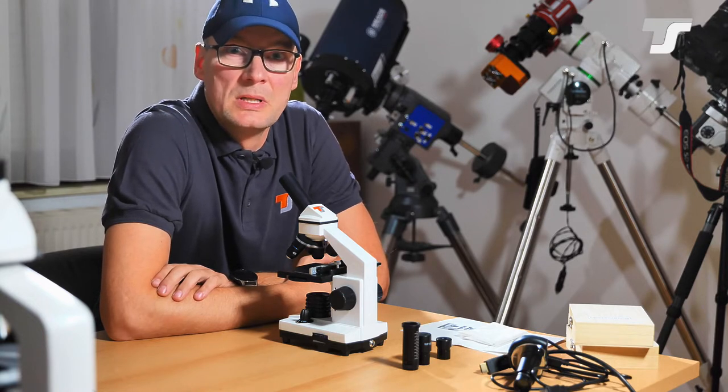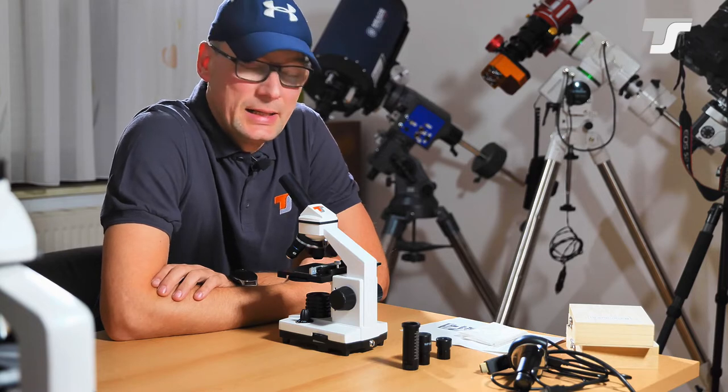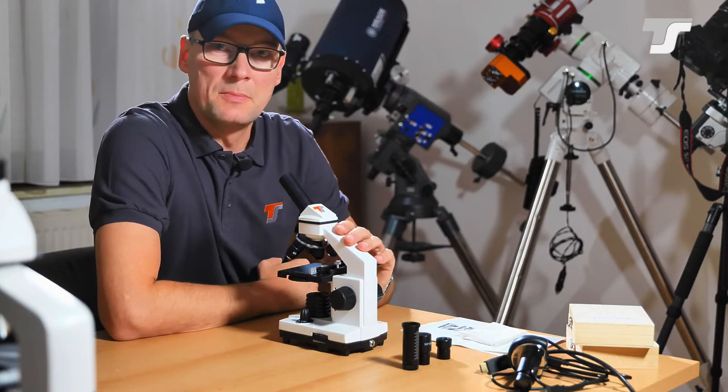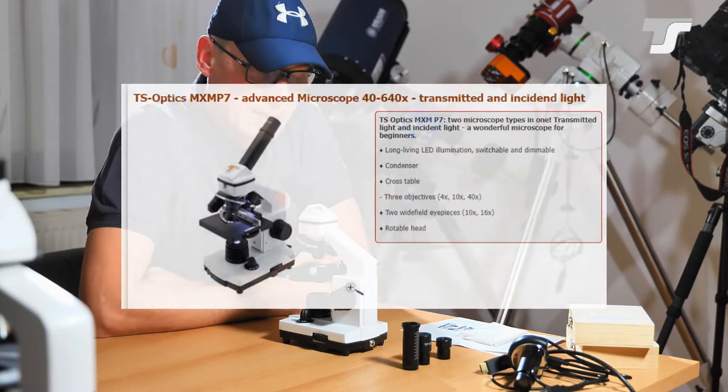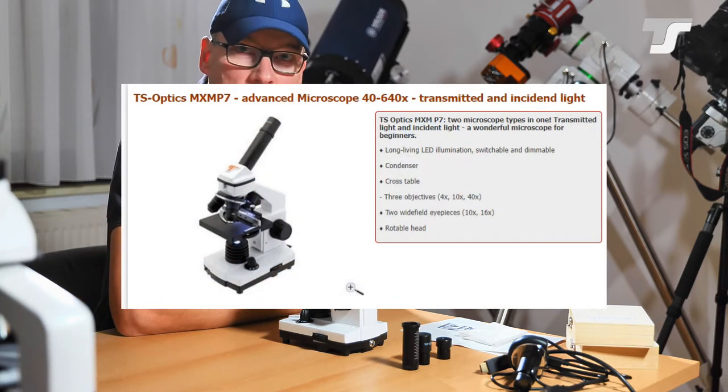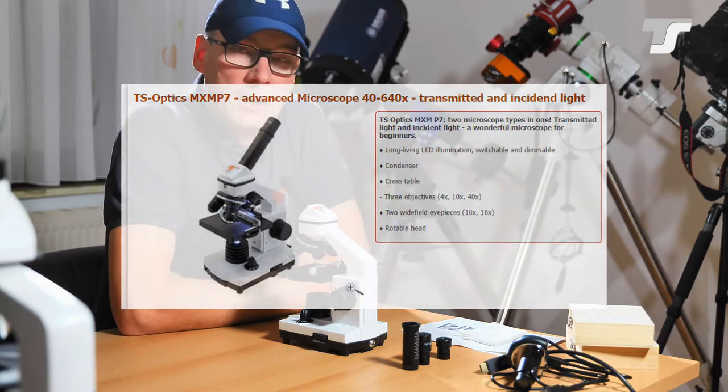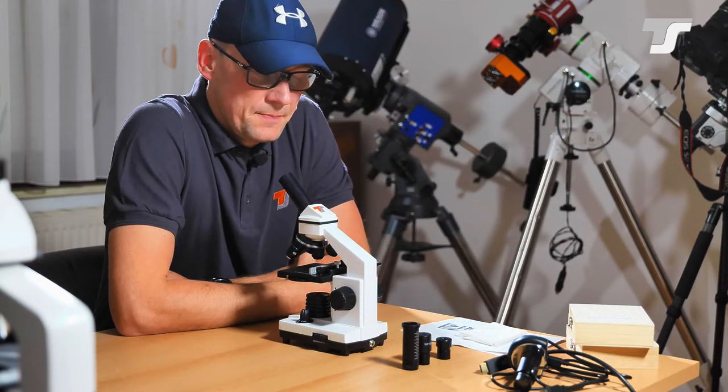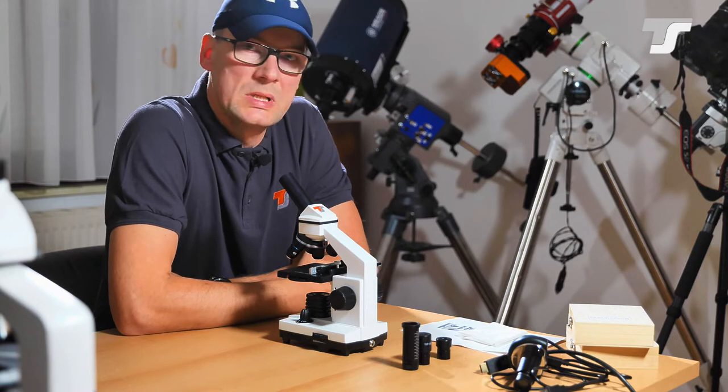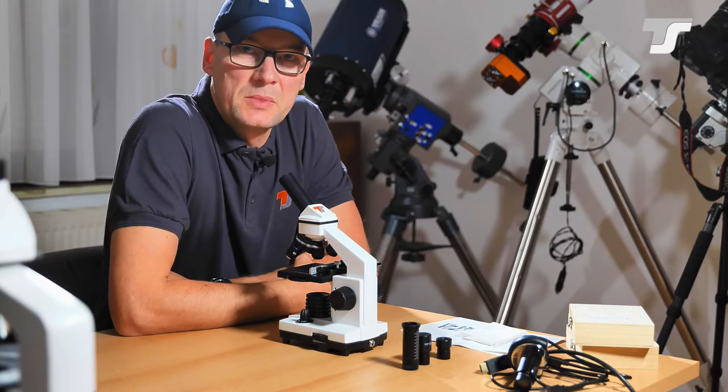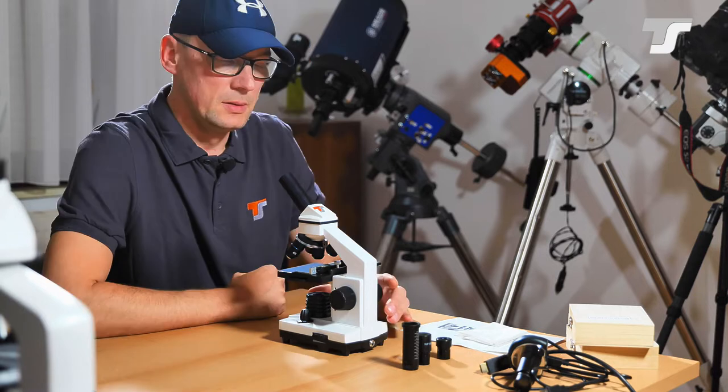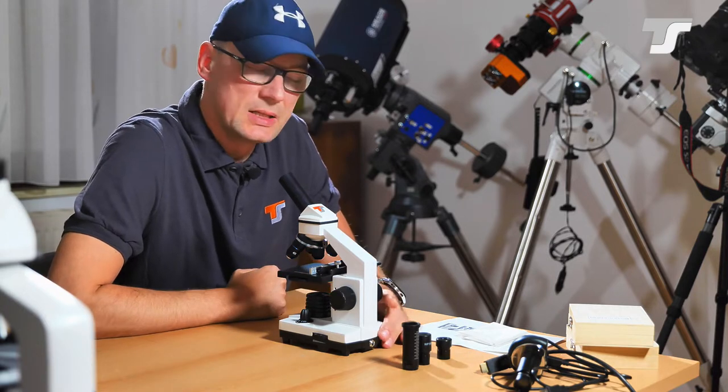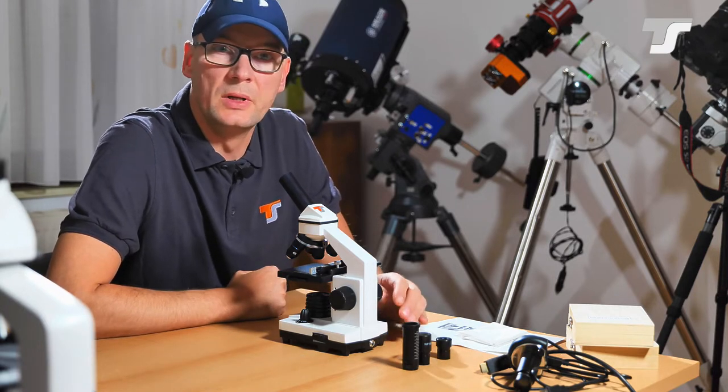And as usual we do this with a little helper. In this case, this microscope here. This is a monocular biological microscope from TS, the TS XMP7. This features some interesting things. First and foremost the magnification from 40 times to 640 times. But it also has some nice features integrated that I want to explain in the next minutes.